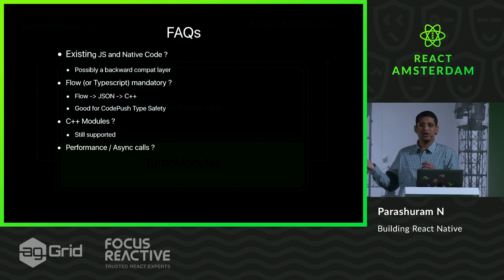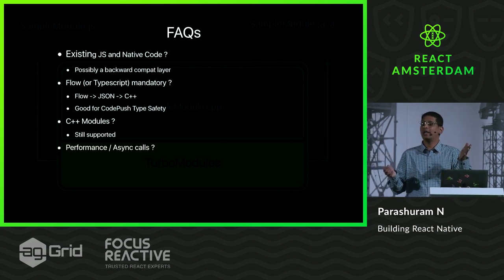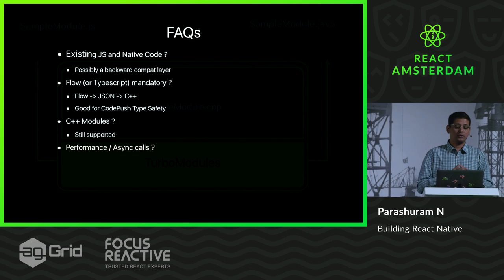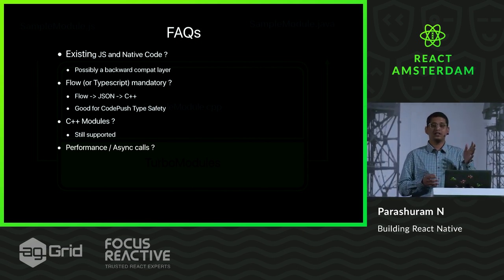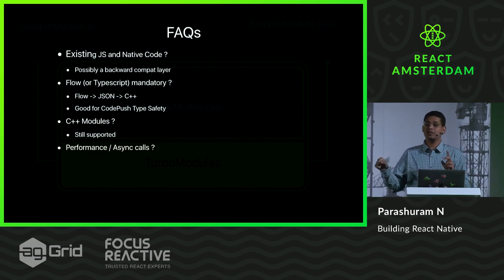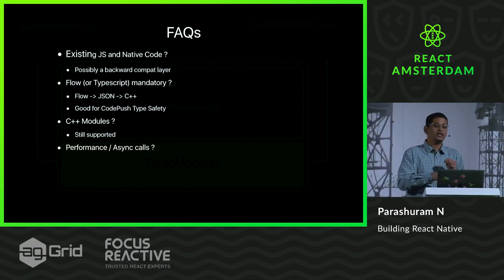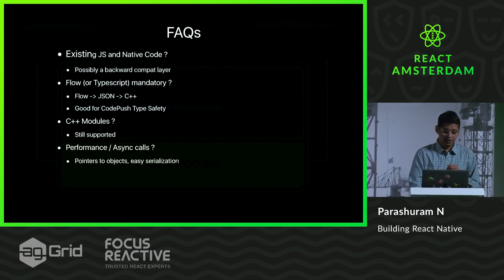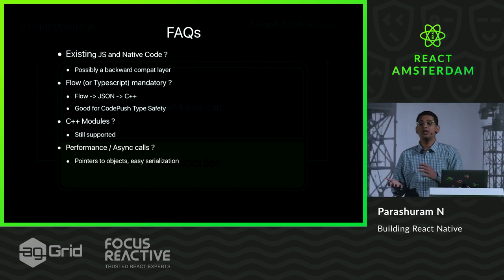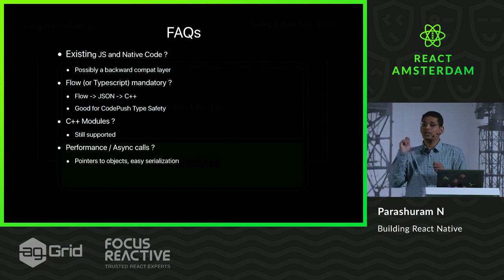What about performance? We used to have a bridge that was asynchronous and hence non-blocking. With this new system, calls are synchronous, which means Java or Objective-C can now return a promise, and it will be up to the native module to decide whether it wants to return immediately or later. Serialization is also easier — you get back a C++ pointer with methods on it. You don't have to worry about serializing or deserializing. You can just call methods on it as if you had a regular JavaScript object.